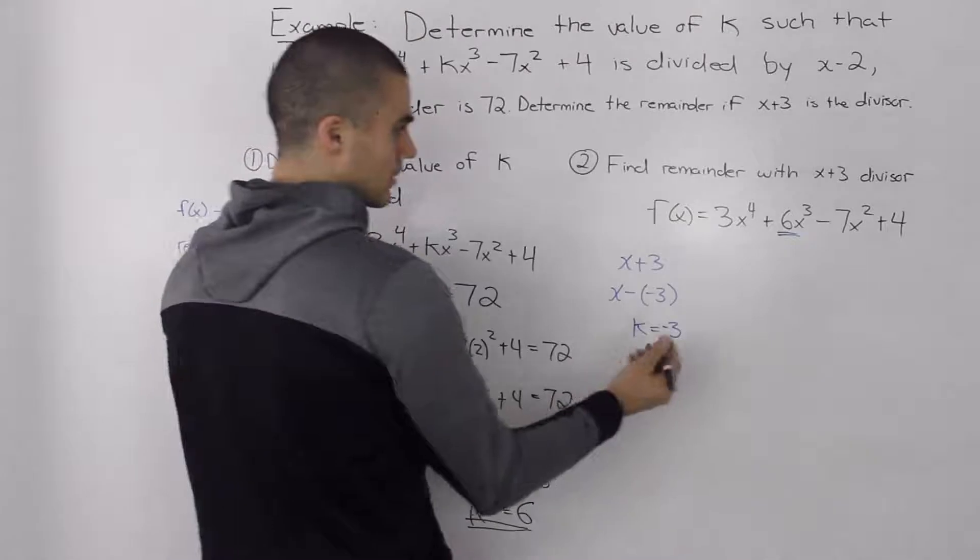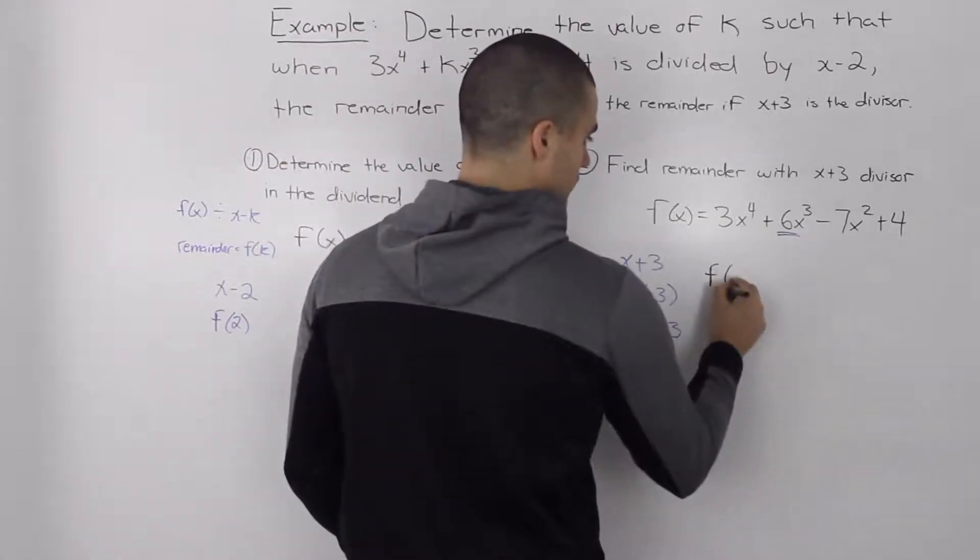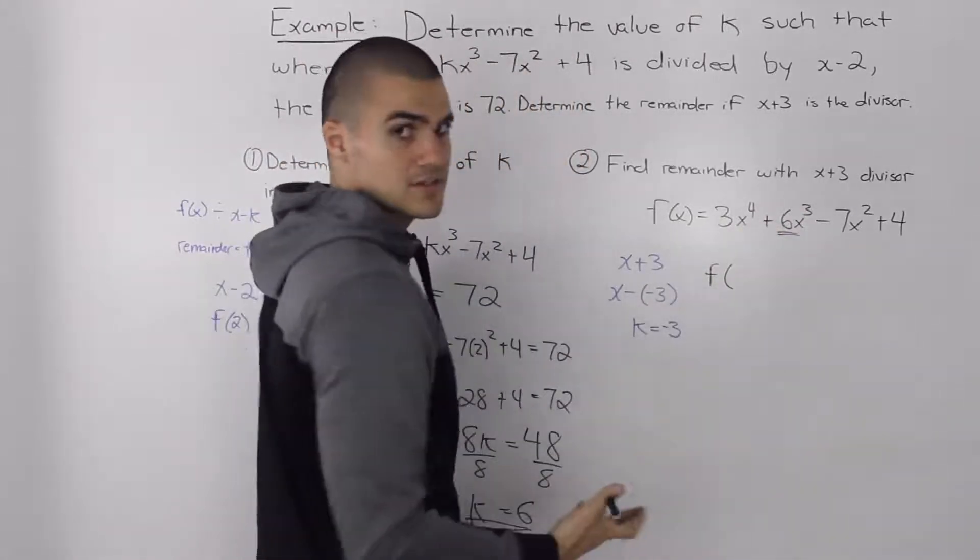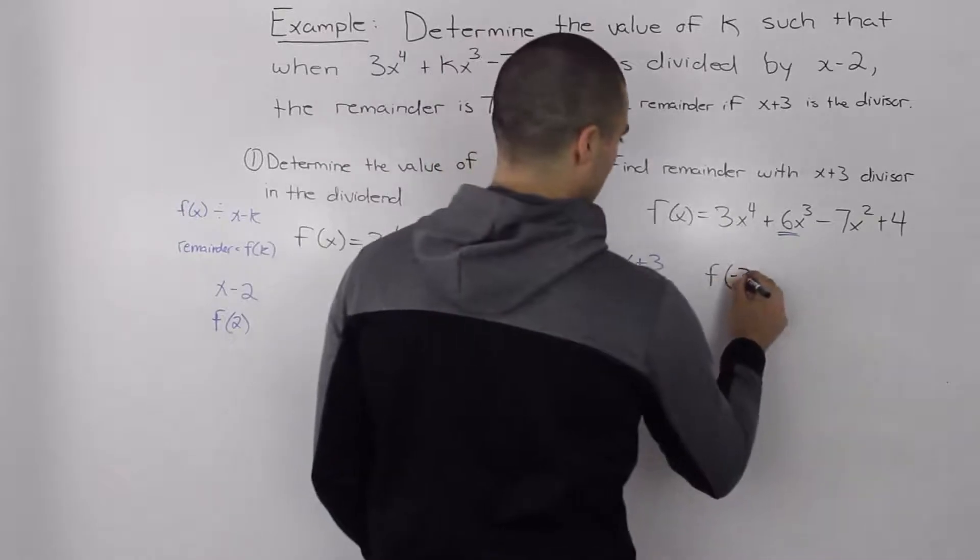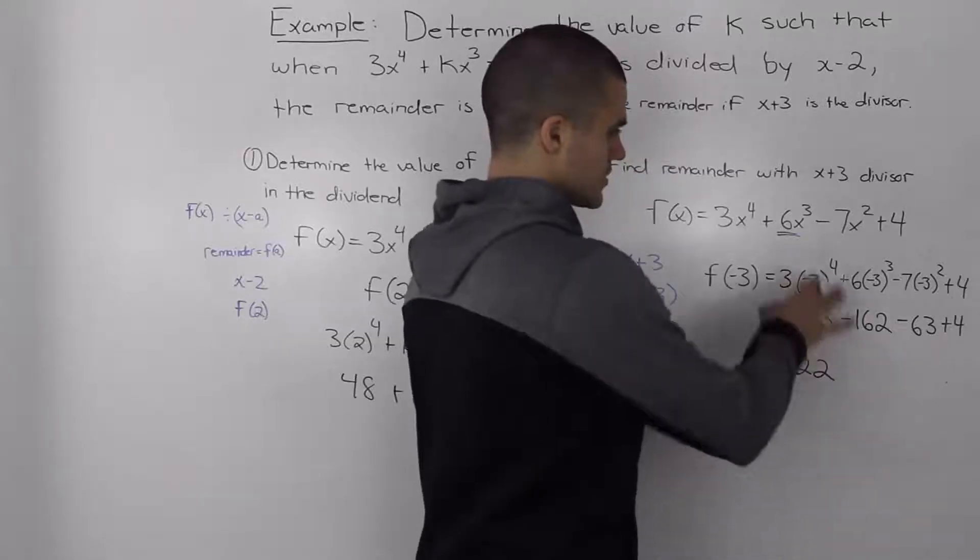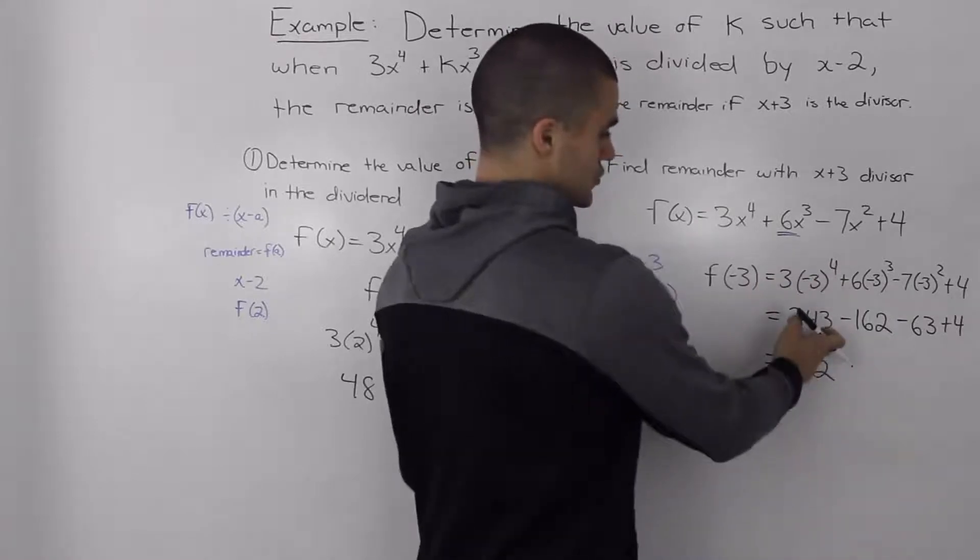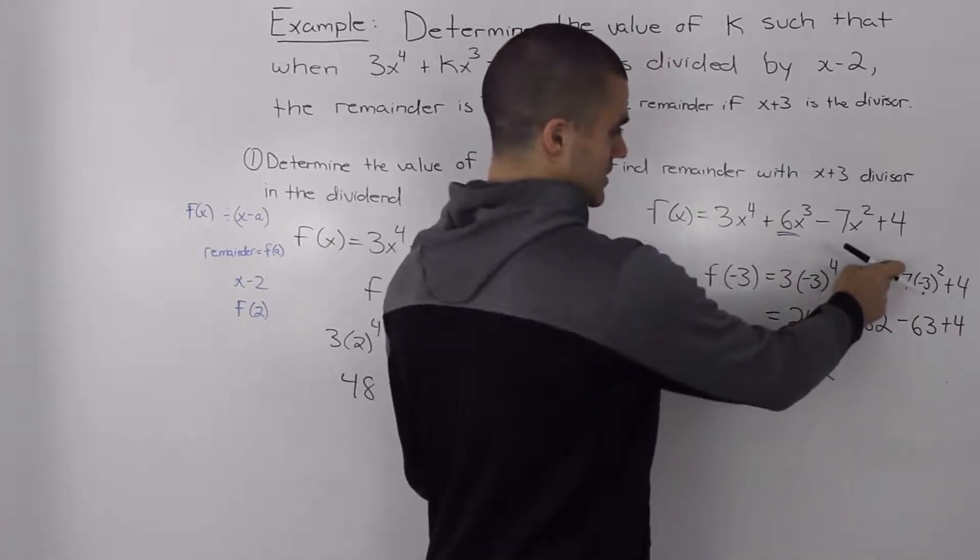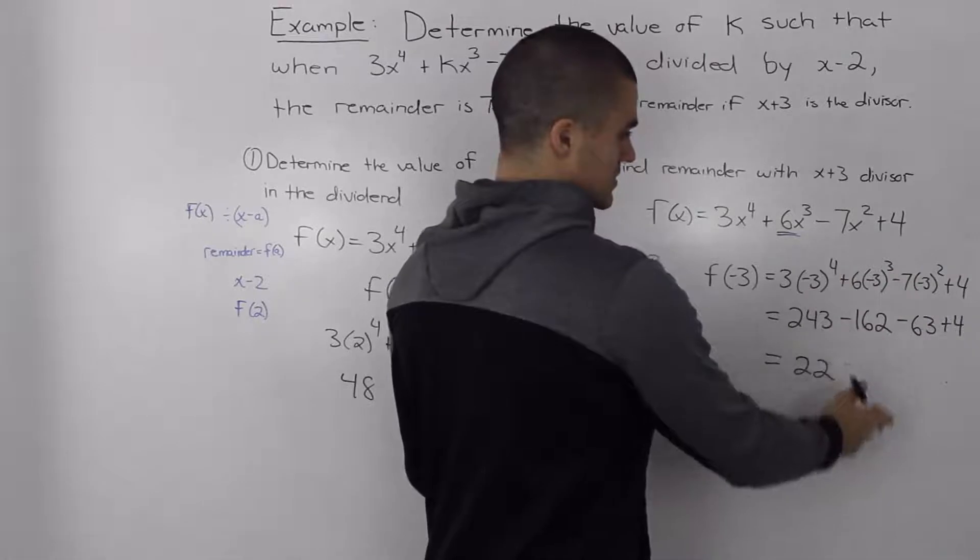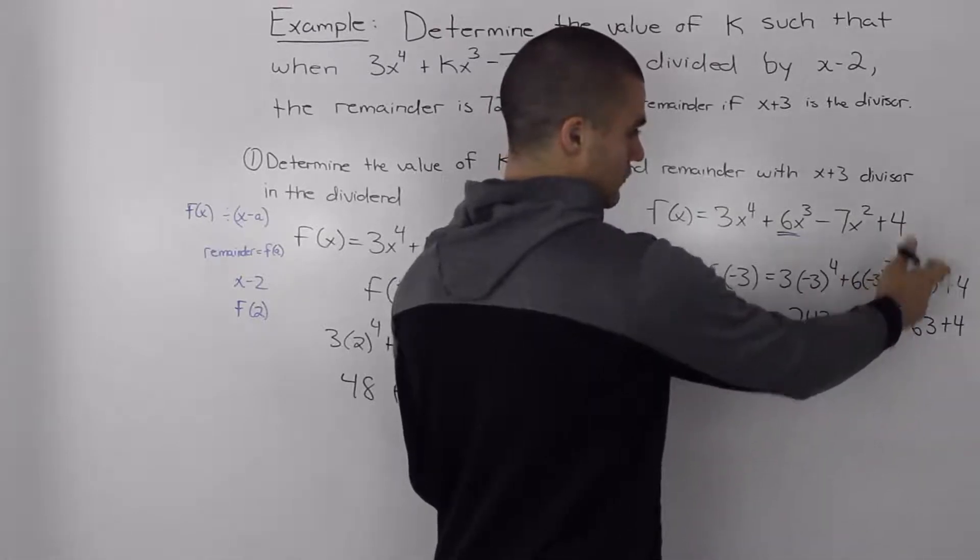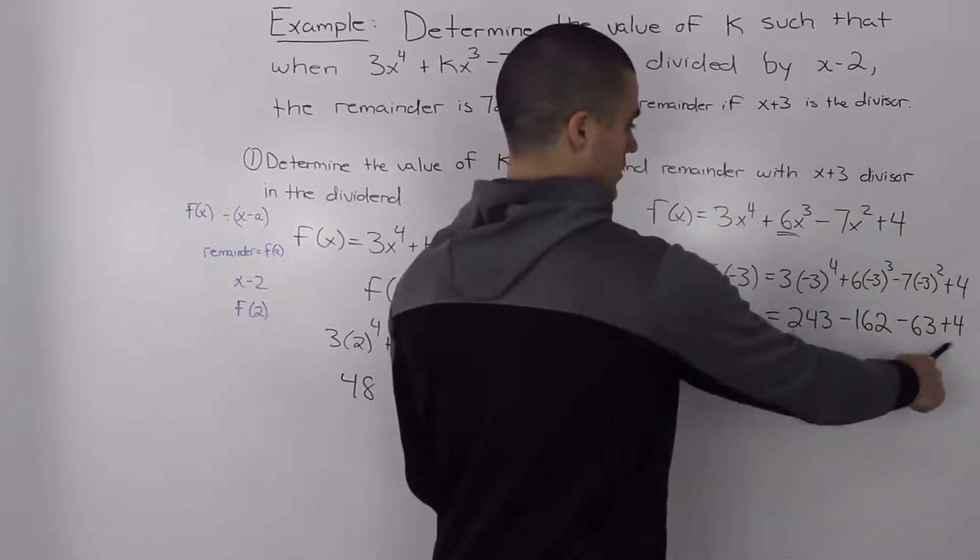So then to find the remainder, all we have to do is plug in negative 3 for the x values in the dividend, and that would give us the answers. So then inputting all of that in your calculator, 3 times negative 3 to the power of 4 is 243, 6 times negative 3 to the power of 3 is negative 162, negative 7 times negative 3 squared is negative 63 plus 4.